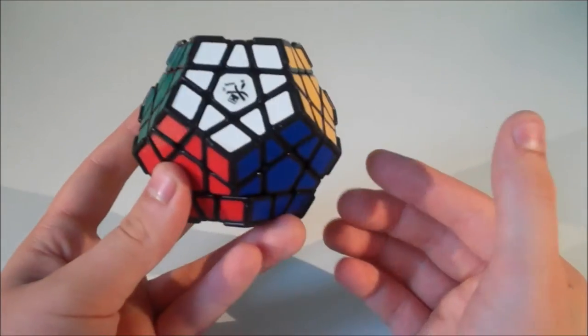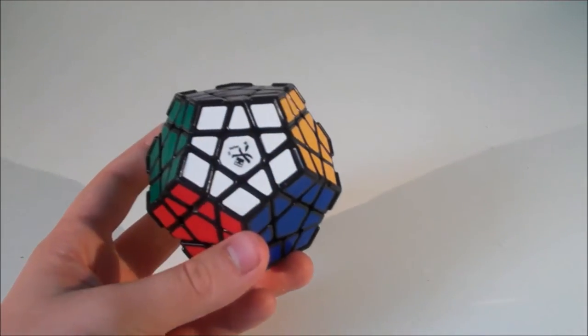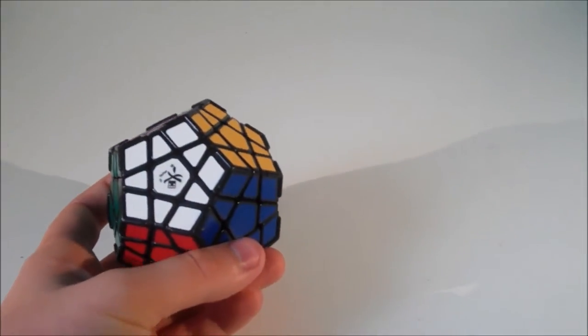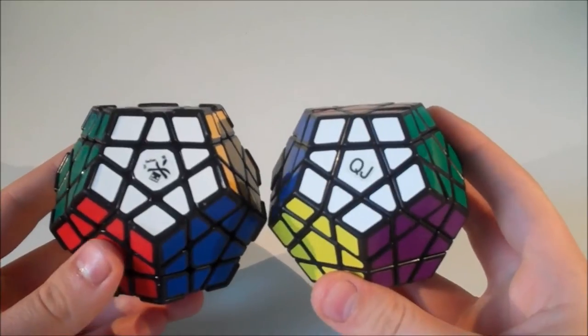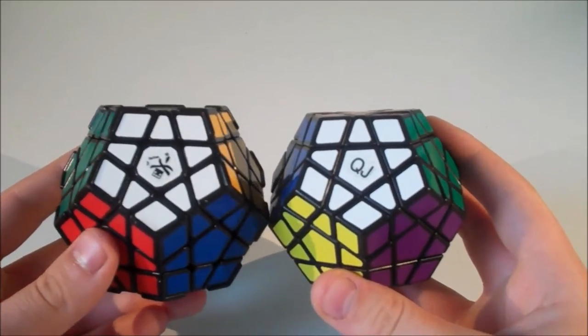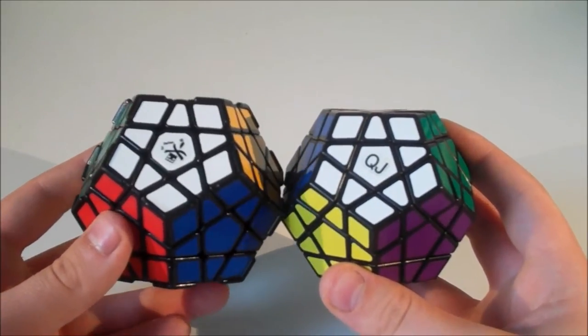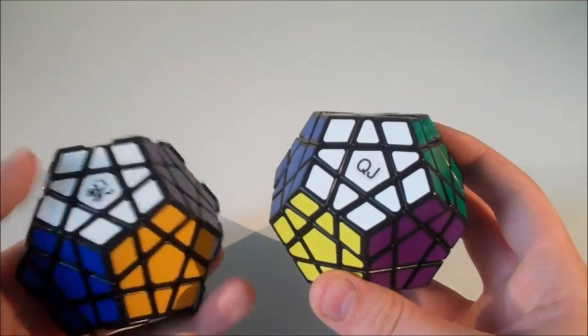So I guess I'll do a size comparison to a QJ Megaminx. That's here. So they look about the same size, apart from obviously the ridges go up a little bit further. So it is the same size. And what about the color scheme?